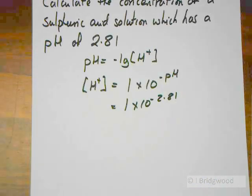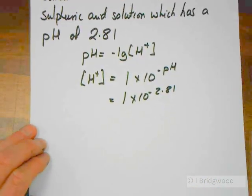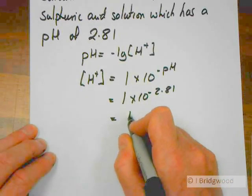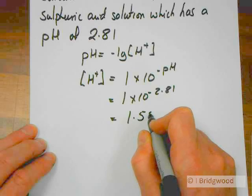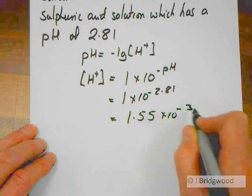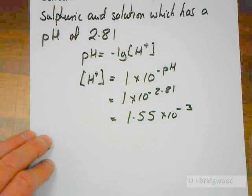Now, everybody's calculator works in a slightly different way, so I'm not going to tell you how to use your calculator, but you should be getting a value of something in the order of 1.55 times 10 to the minus 3 as our concentration of hydrogen ions.